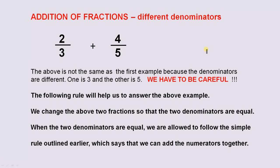Addition of fractions with different denominators. The example is 2 over 3 plus 4 over 5. The above is not the same as the first example because the denominators are different. One is 3 and the other is 5. We have to be very careful. The following rule will help us to answer the above example. We change the above two fractions so that the two denominators are equal. At present they are not equal. When the two denominators are equal we are allowed to follow the simple rule outlined earlier which says that we can add the numerators together.